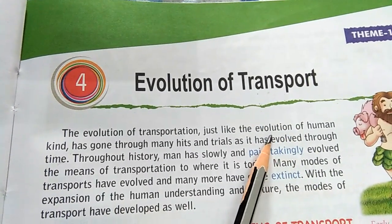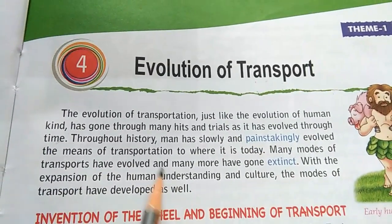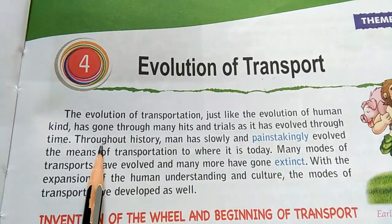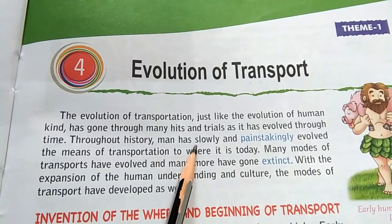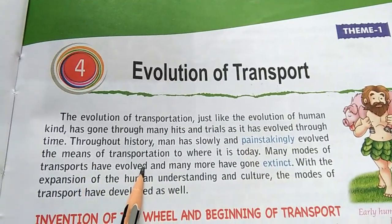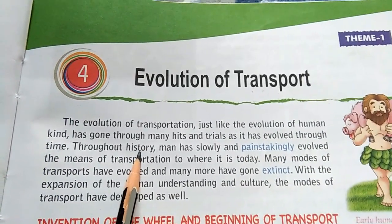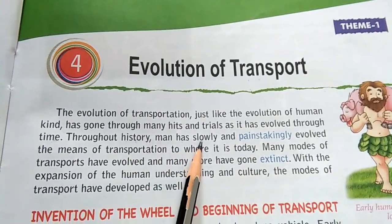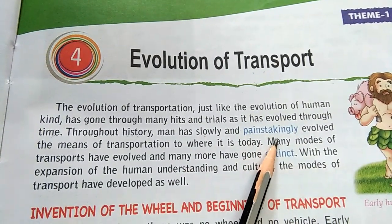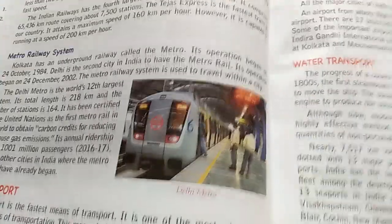From an ape-like structure, man developed into the present human form. Throughout history, man has slowly and painstakingly evolved the means of transport to where it is today. It was a slow and painstaking process — painstakingly meaning done with great care.